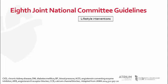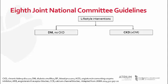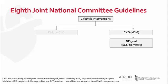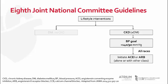After optimizing lifestyle interventions, the treatment algorithm guides pharmacologic medication therapy selection, first based on if the patient has concomitant diabetes or chronic kidney disease, or CKD. For patients with CKD, guidelines recommend a target blood pressure goal of less than 140 over 90 mmHg. Regardless of race, initial therapy recommendations are to initiate an angiotensin-converting enzyme inhibitor, or ACE inhibitor, or an angiotensin-2 receptor blocker, or ARB.